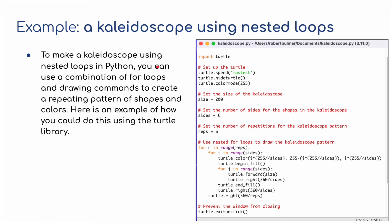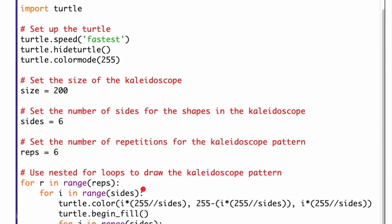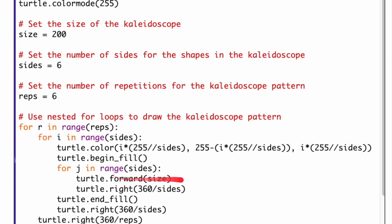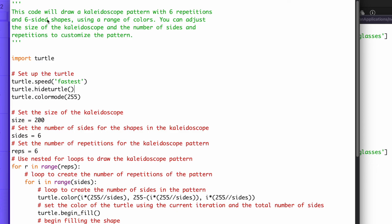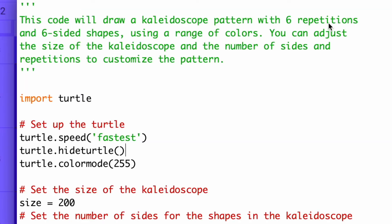For the final example I'm going to make a kaleidoscope using the turtle library in Python. It uses a combination of four nested loops and drawing commands to create a repeating pattern of shapes and colours. This code will draw a kaleidoscope pattern with six repetitions and six-sided shapes using a range of colours.